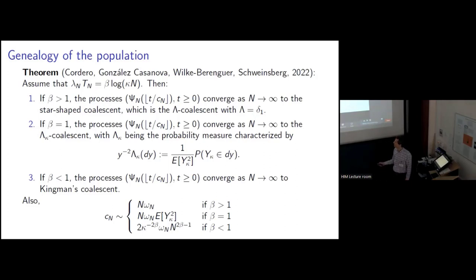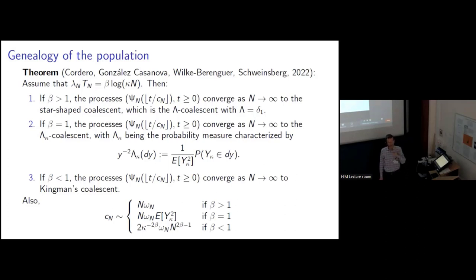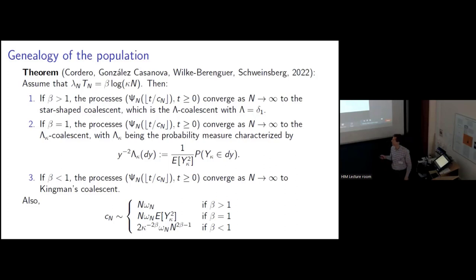We can also calculate the probability that two individuals have the same parent. When beta is greater than one, this is asymptotically N times omega_N, which is approximately the probability that there is an individual that wakes up early from dormancy. When beta is equal to one, we have to multiply that by the probability that both of the sampled individuals are coming from that family, which is the expected value of Y_kappa squared. And there's a different scaling when beta is less than one.